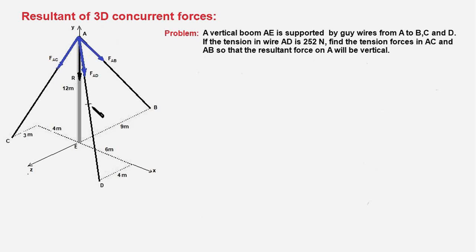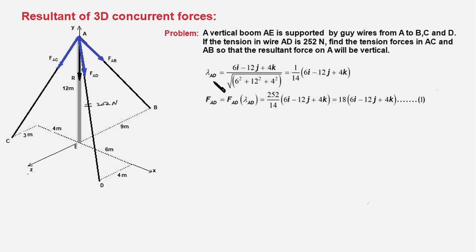The tension in this wire is known to be 252 Newtons. So the first step that we're going to take is to write these three forces in vector form, and for that we shall have to find out the unit vectors along the three directions. So the unit vector along AD is the position vector divided by the magnitude of the position vector.